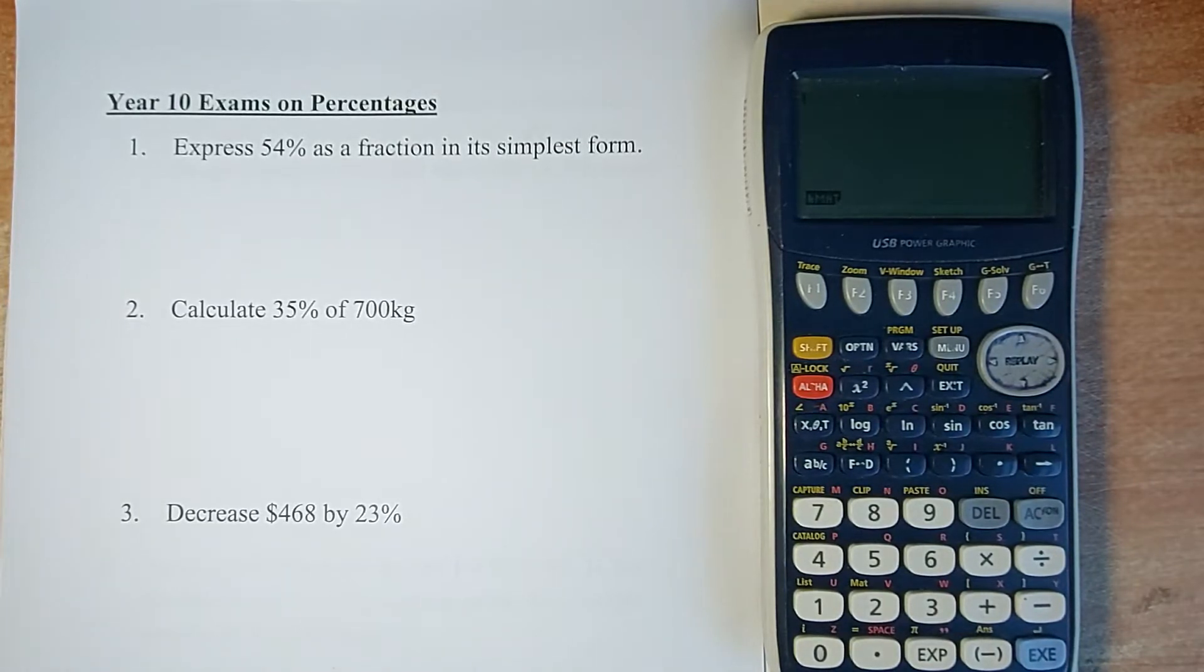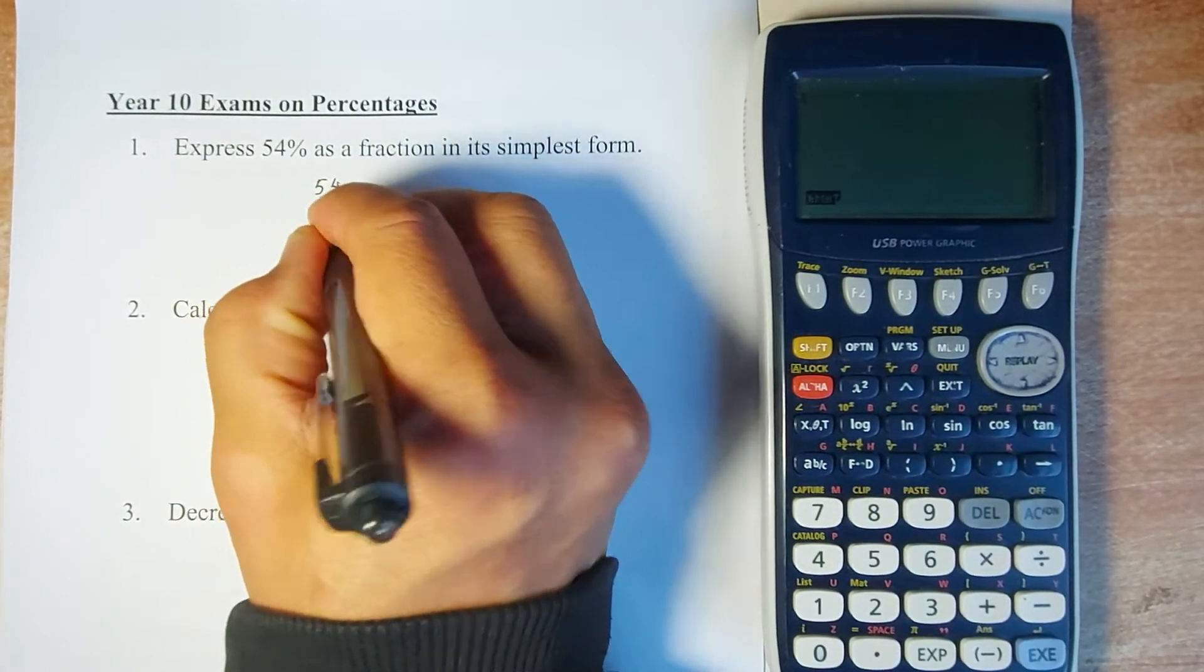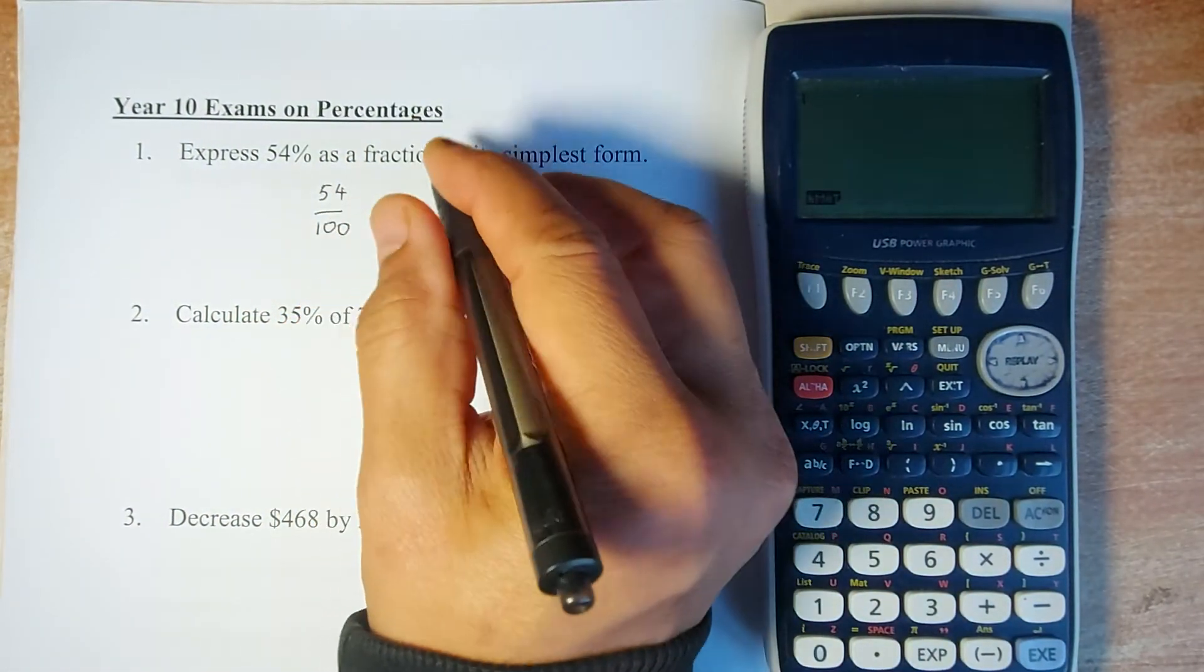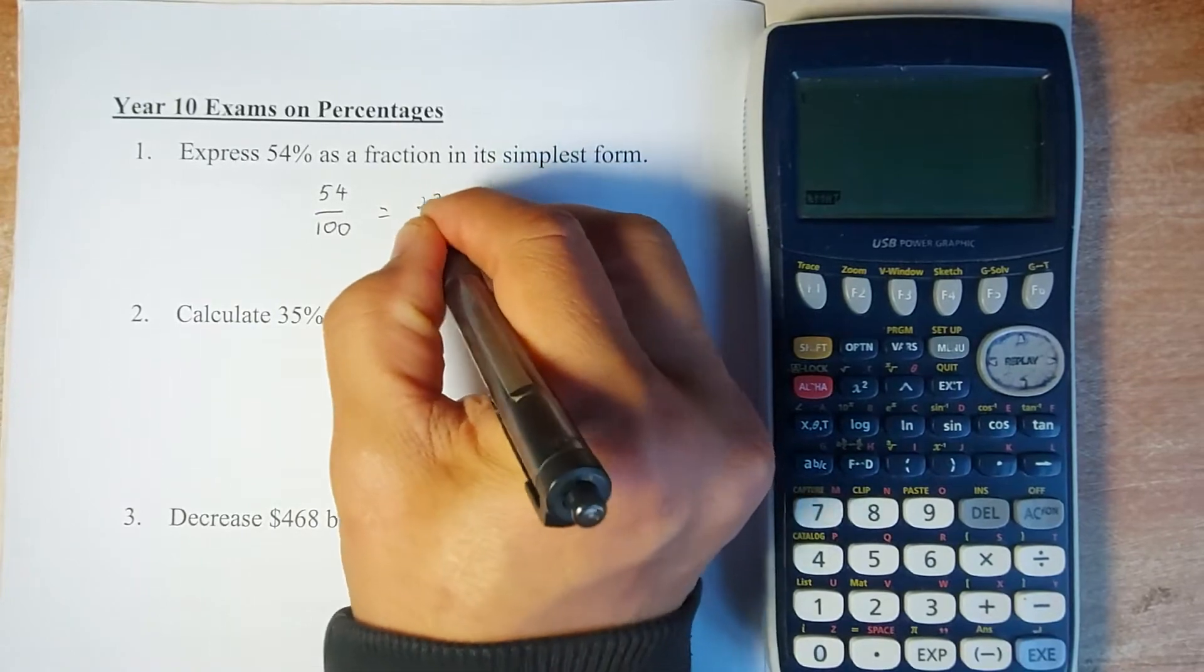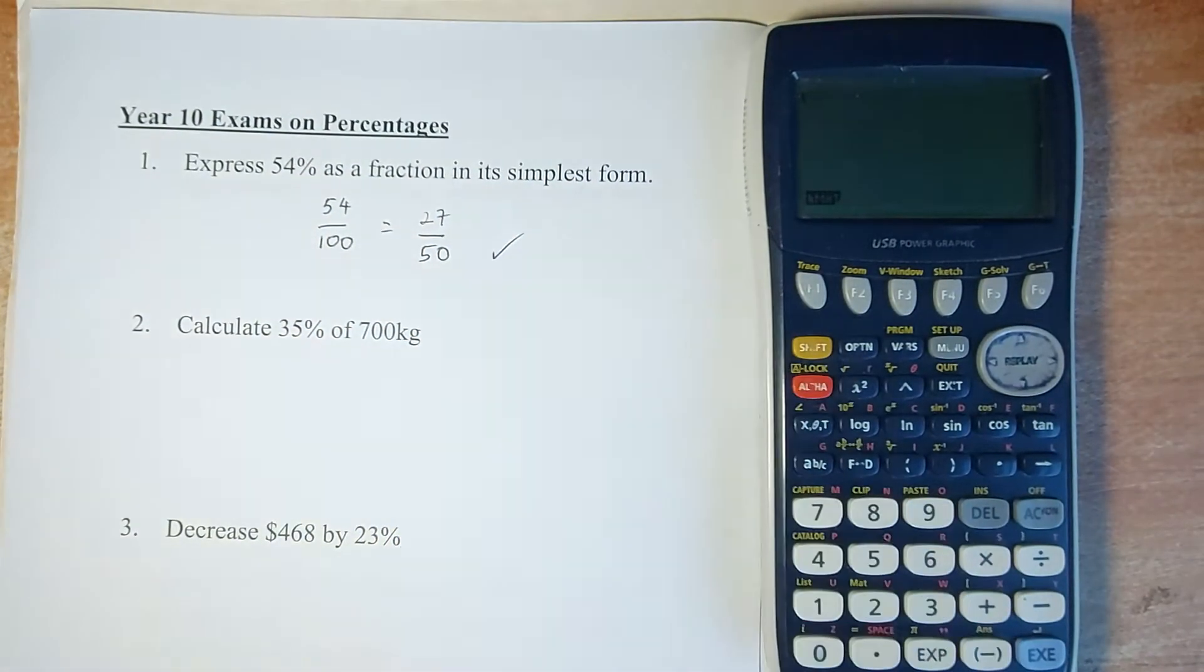The first question asks you to express 54% as a fraction. As a fraction, 54% means it's going to be 54 out of 100. You simplify them because in simplest form it's going to divide by 2 on the numerator and denominator, so the answer is 27 out of 50. That will give you a tick in the exam.